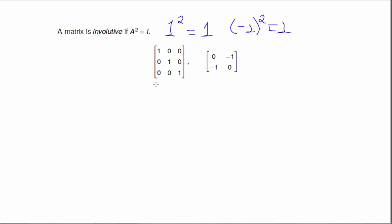And here are two involuted matrices. Once again, the identity squared is equal to itself, so it's definitely involutive. And here's another one. And once again, you can check this.